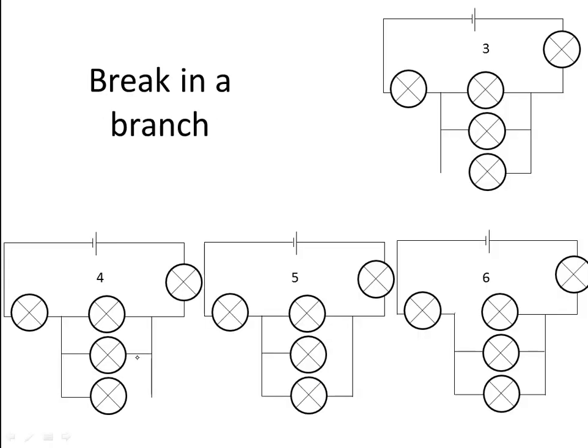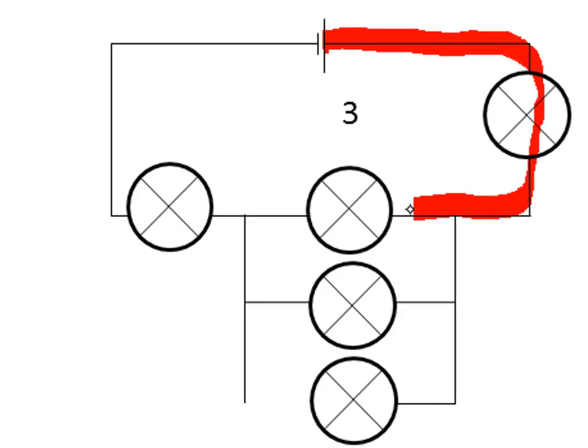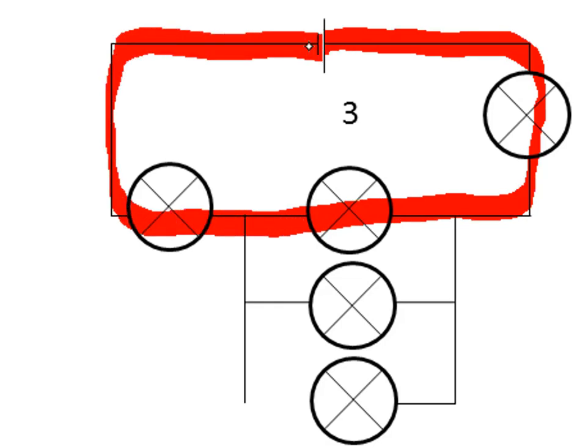But what about if we break a parallel circuit in one of its branches? Circuits three to six have a broken section in one of the branches. A bulb will shine if current can flow through it, and it won't shine if current cannot. For current to flow, there needs to be a complete path of conducting wires from positive to negative. In circuit three, we can see a complete path from positive through those three bulbs in the main part to negative — so those bulbs are all going to shine.